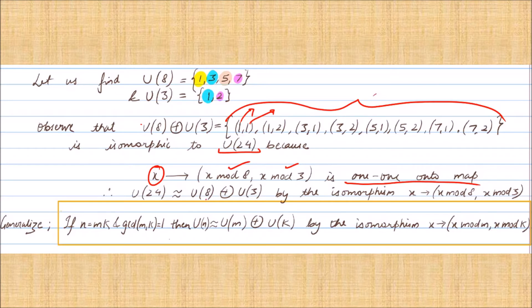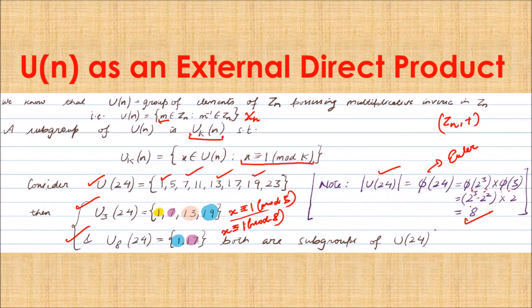To generalize: if n is a composite number expressible as a product of m and k such that gcd(m, k) = 1 — this condition is very important — then U(n) can be expressed as U(m) × U(k), with the isomorphism rule as described.